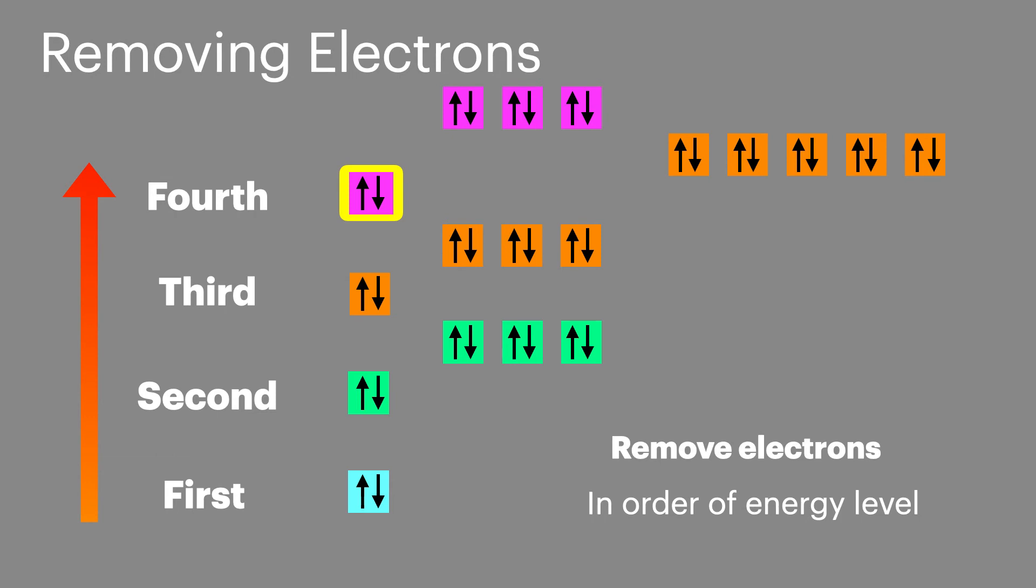Keeping our focus on the 4S orbital, we'll now remove the electrons. Unfortunately, we don't just do the reverse of filling them up. That would be too simple. Instead, we actually go back down the energy levels in order, emptying the 4P, then the 4S, before the 3D. This is important to remember when we're writing out electron configurations for positive ions where electrons have been removed.